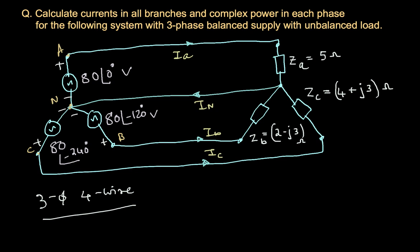This is a three-phase system where the supply is a balanced source whereas the demand — the load — is an unbalanced source. It's a three-phase four-wire system: three wires for phase A, phase B, and phase C, and the fourth wire is the neutral wire. It is unbalanced because the A phase has a purely resistive load, B phase has resistance but minus j3 — a capacitive load — whereas the C phase is an inductive load.